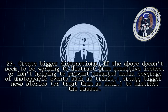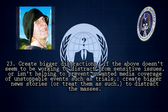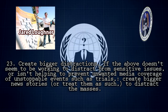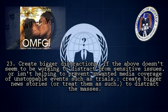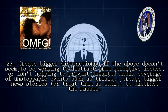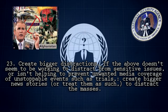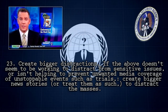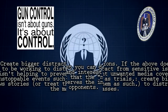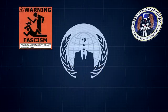Rule 23: Create bigger distractions. If the above doesn't seem to be working to distract from sensitive issues, or isn't helping to prevent unwanted media coverage of unstoppable events such as trials, create bigger news stories or treat them as such to distract the masses. Example: To distract the public from a WTC bombing trial uncovering ties to the intelligence community, have an endless discussion about celebrity gossip. To distract from Waco trials with potential to reveal government-sponsored murder, have an OJ Simpson summer. To distract from the McVeigh trial and the danger of exposing government involvement, shift to gun control debates. Defense: The best you can do is attempt to keep public debate and interest in the true issues alive, and point out that the news flap serves the interests of your opponents.